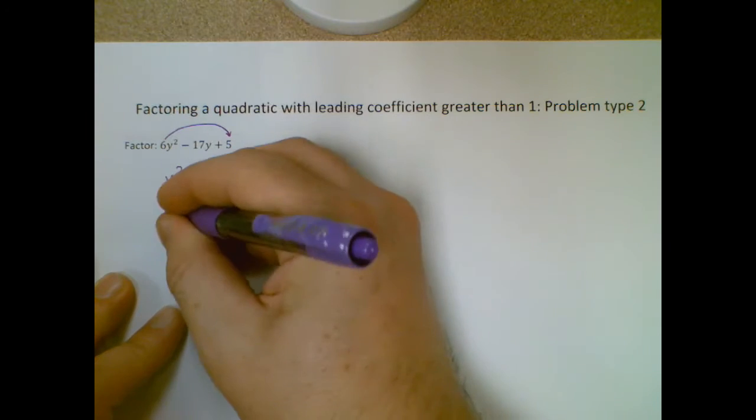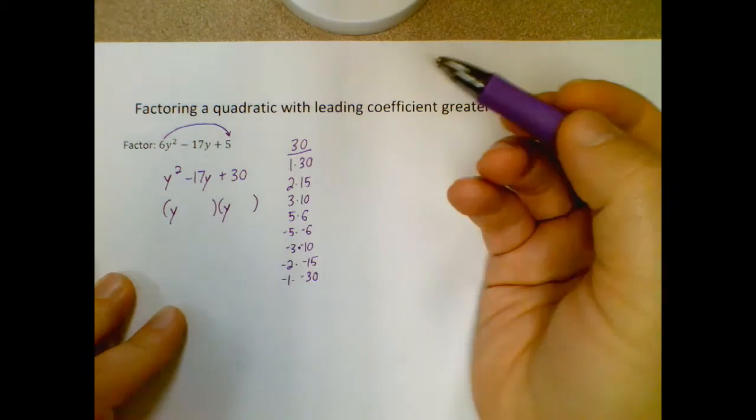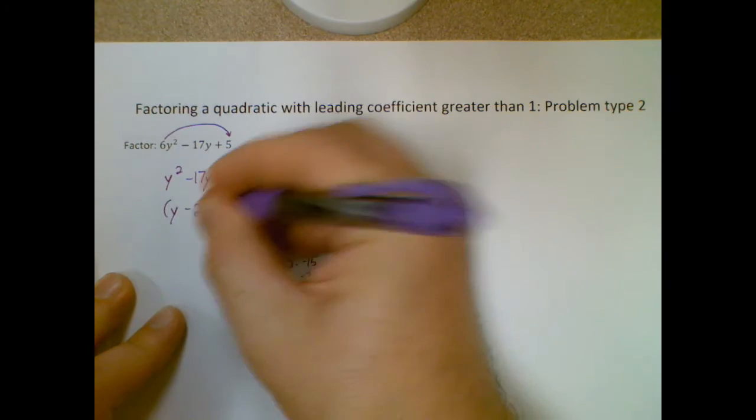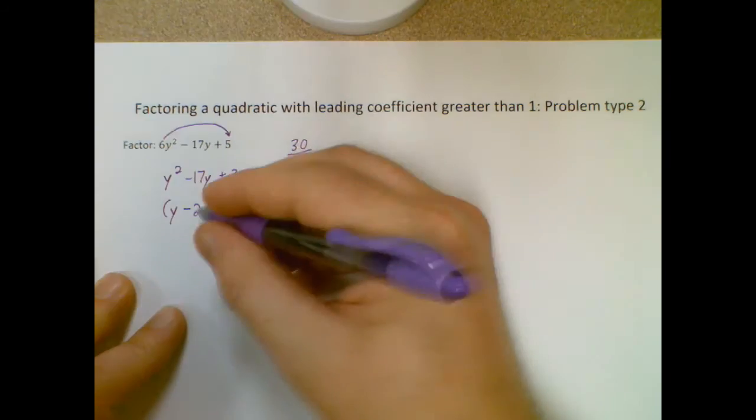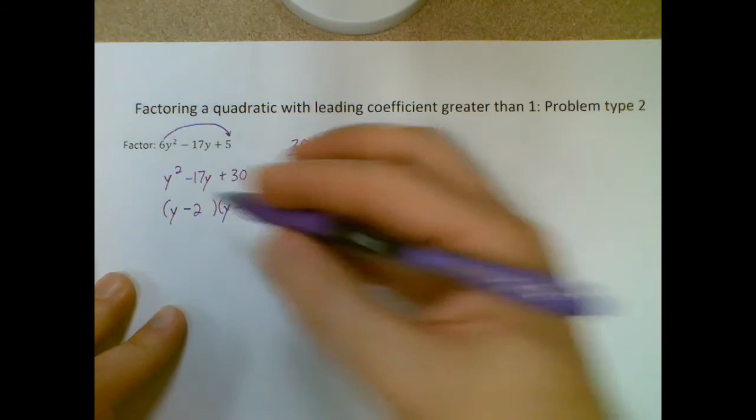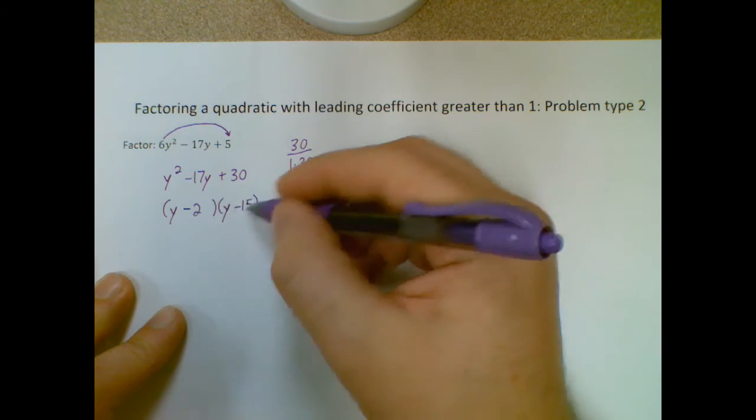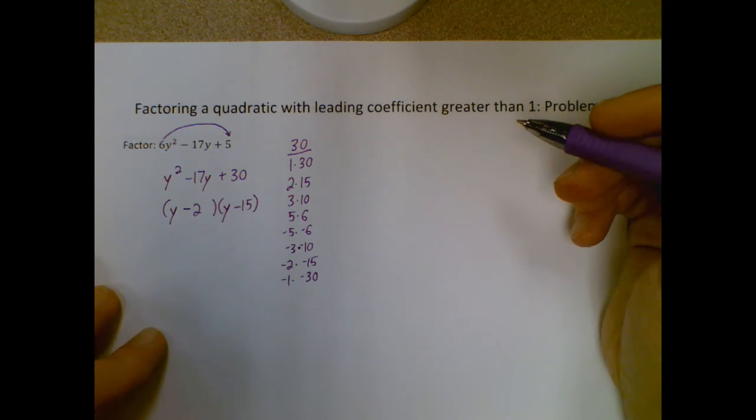When I put that in, I know that both sets of my parentheses have to start with a y. That's how I get y squared. I'm just going to plug in my two numbers, minus 2 and minus 15. So I have y minus 2 and y minus 15. The order doesn't matter here because we're multiplying, so the order is irrelevant.